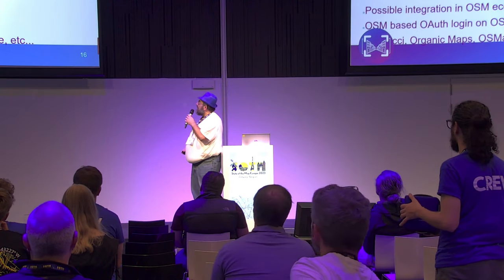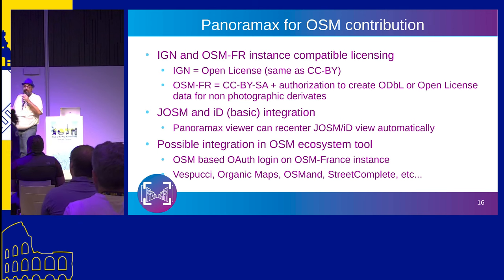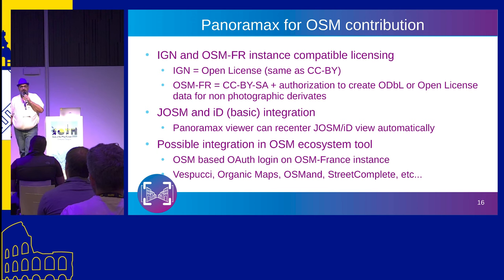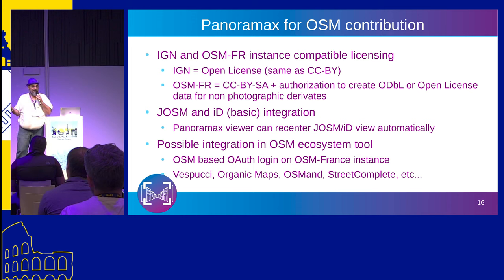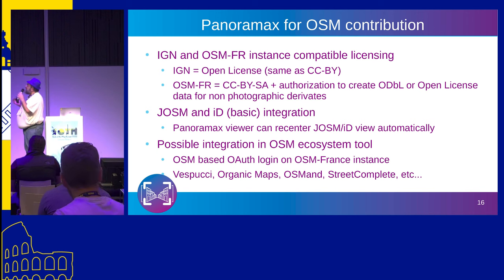Open Panoramax for OpenStreetMap contribution: we have two instances for the moment, but I hope we'll have more very soon. Licensing on both instances is compatible with OpenStreetMap contribution. We did something special on the OpenStreetMap side — we wanted a share-alike license for the pictures, but if you put them under CC-BY-SA only, you cannot use them to improve an ODbL database. So we decided to have CC-BY-SA for the pictures themselves, but with an authorization to create ODbL or open license data from them.